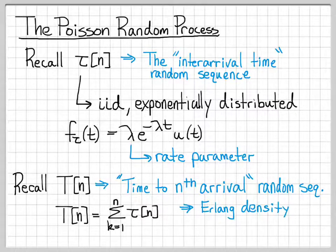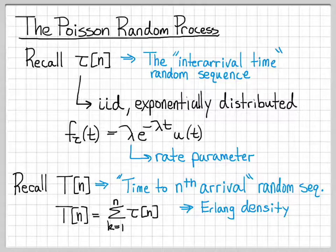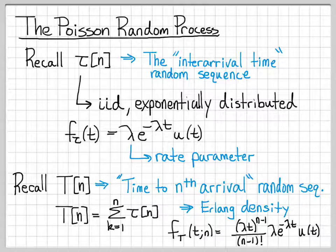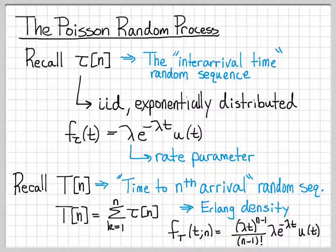Assuming that the inter-arrival times are IID exponential random variables, computing the distribution of t of n requires convolution, and it turns out that t of n has an Erlang density with this probability density function. This density is a function of time index n — if you tell me which n you want, I can write down the density function for that random variable. As n increases, this density function changes, whereas for the inter-arrival times, the distribution was the same for all time.